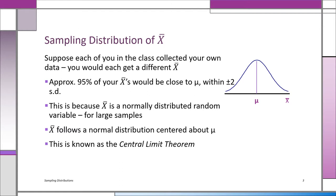Let's continue imagining this distribution of the x-bars. Every time we could imagine taking another sample, we would have another value of x-bar. We could have hundreds, thousands, millions of these samples, until we imagine a fully formed population of x-bars. And approximately 95% of the x-bars would be very close to the true population mean mu, within plus and minus two standard deviations.